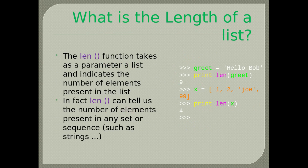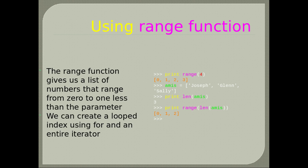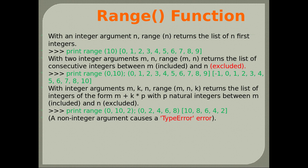The len() function takes a list as a parameter and indicates the number of elements. len() can tell us the number of elements in any set or sequence, such as strings. Using the range function: range() gives a list of numbers from 0 to n-1. With two integer arguments m and n, range() returns consecutive integers between m (included) and n (excluded). With three arguments m, n, p, range() returns integers of the form m + k*p between m and n.